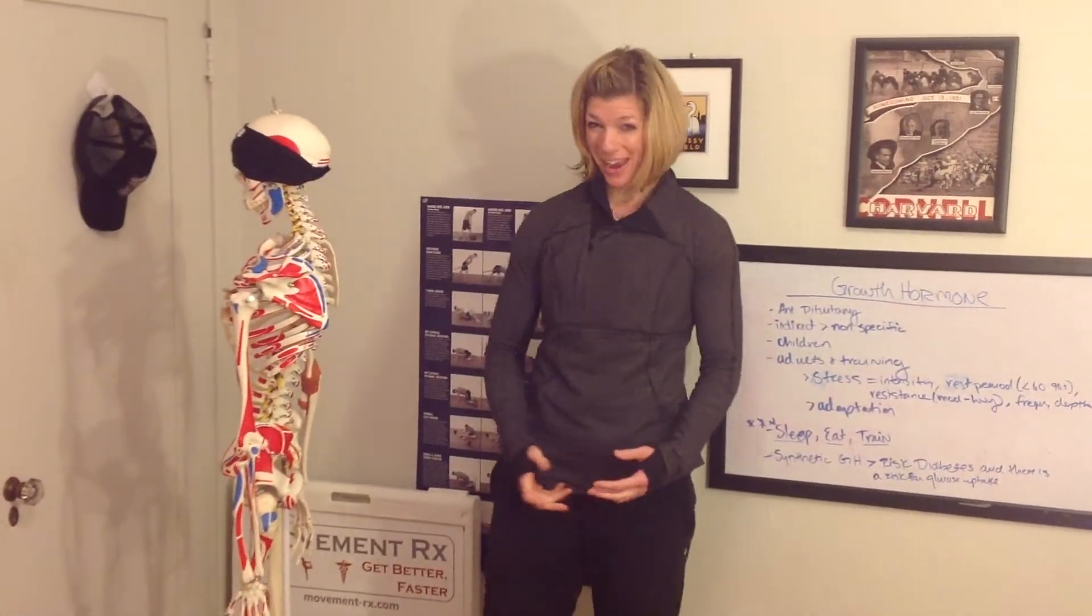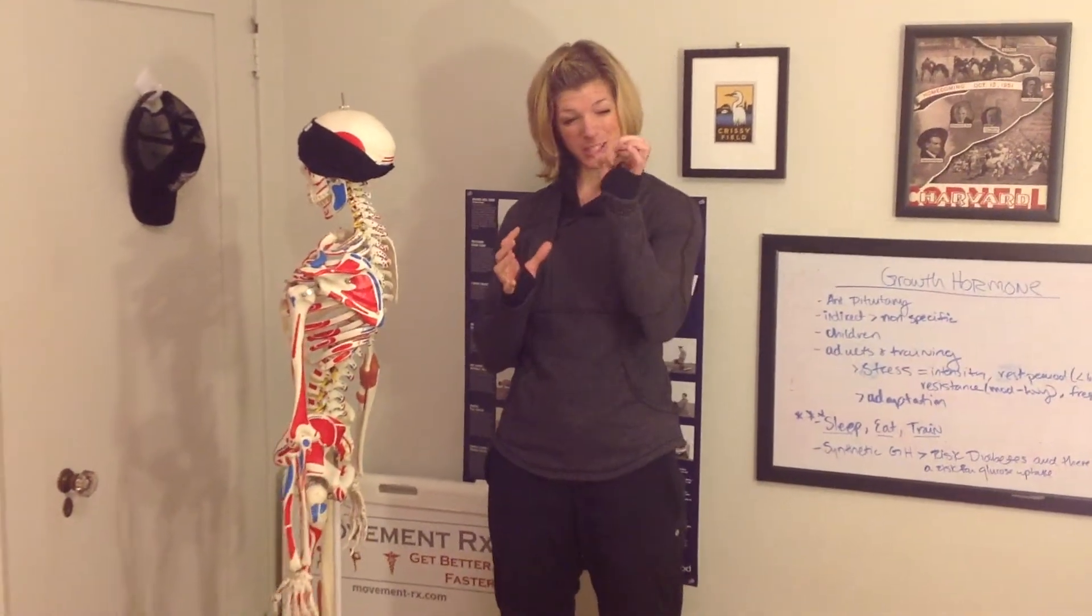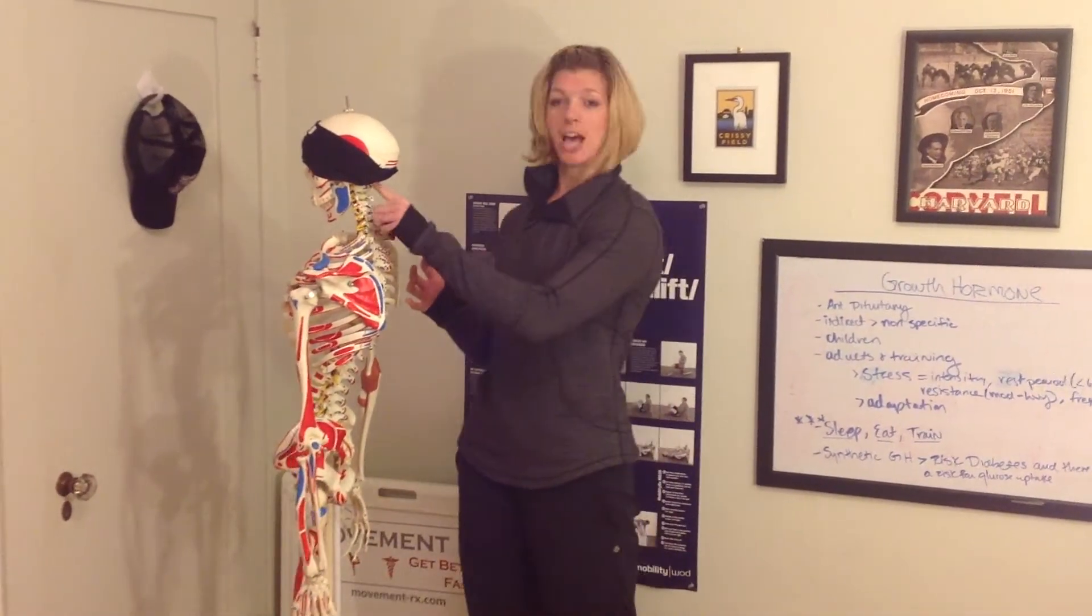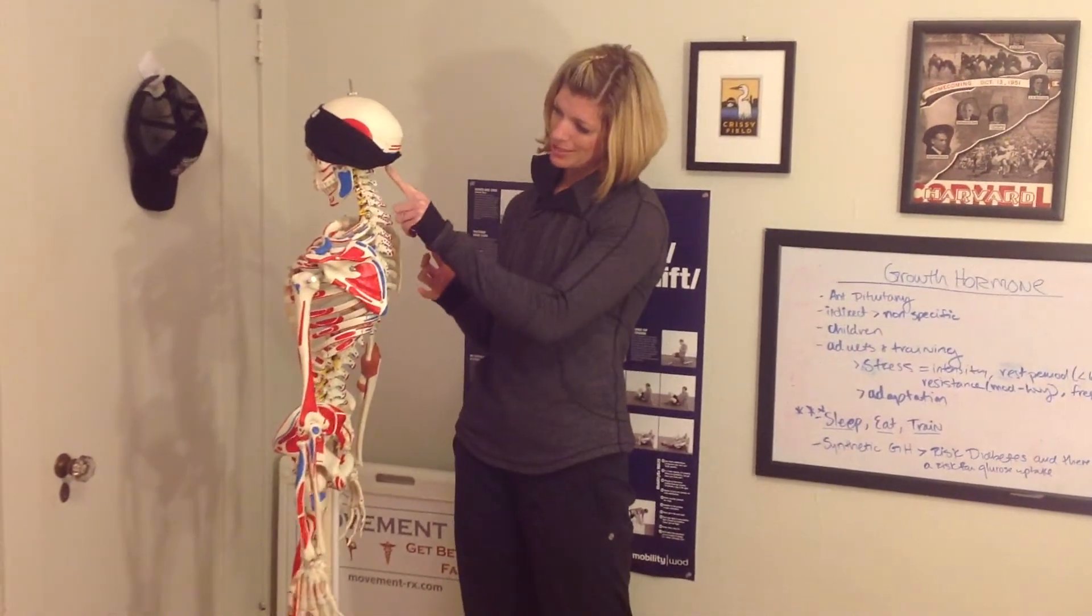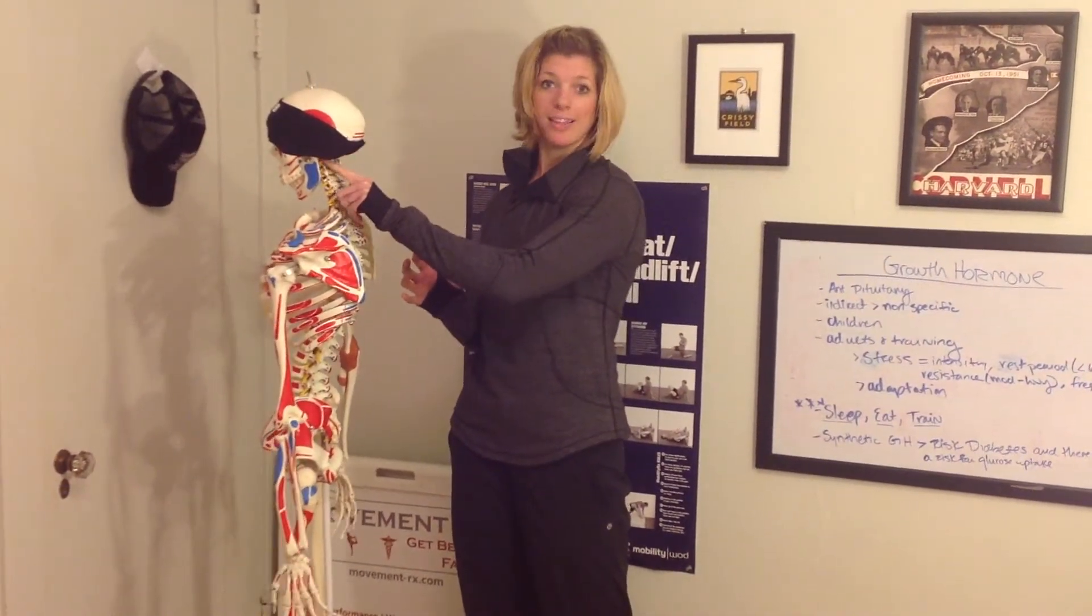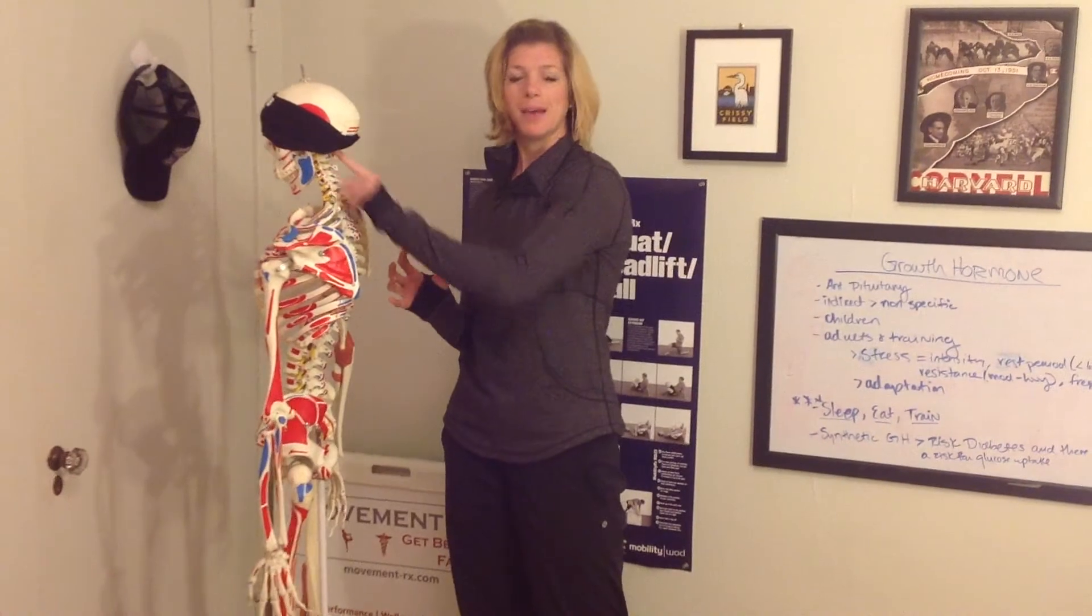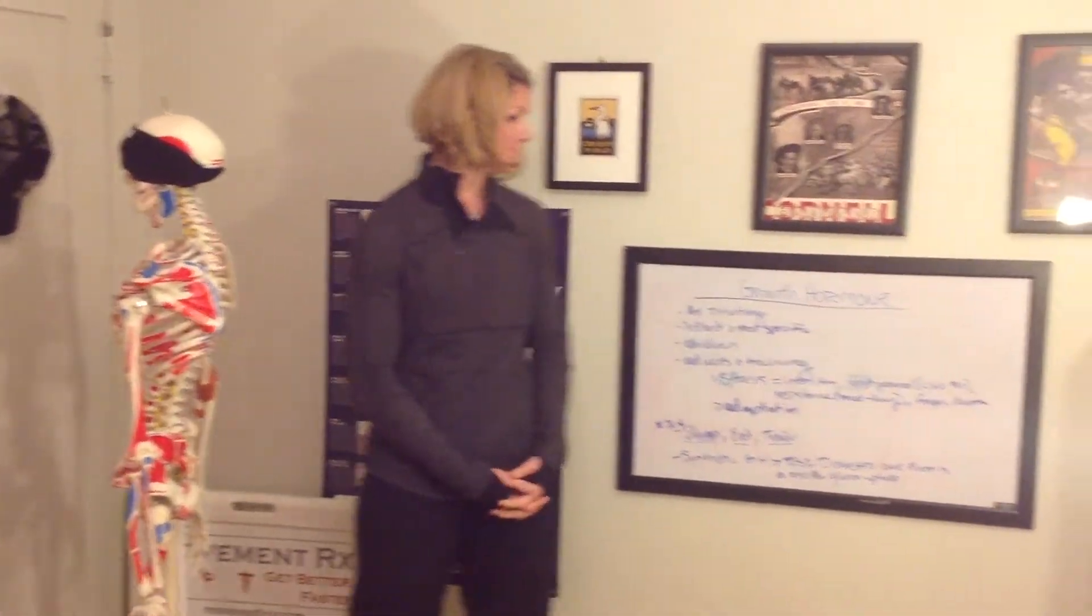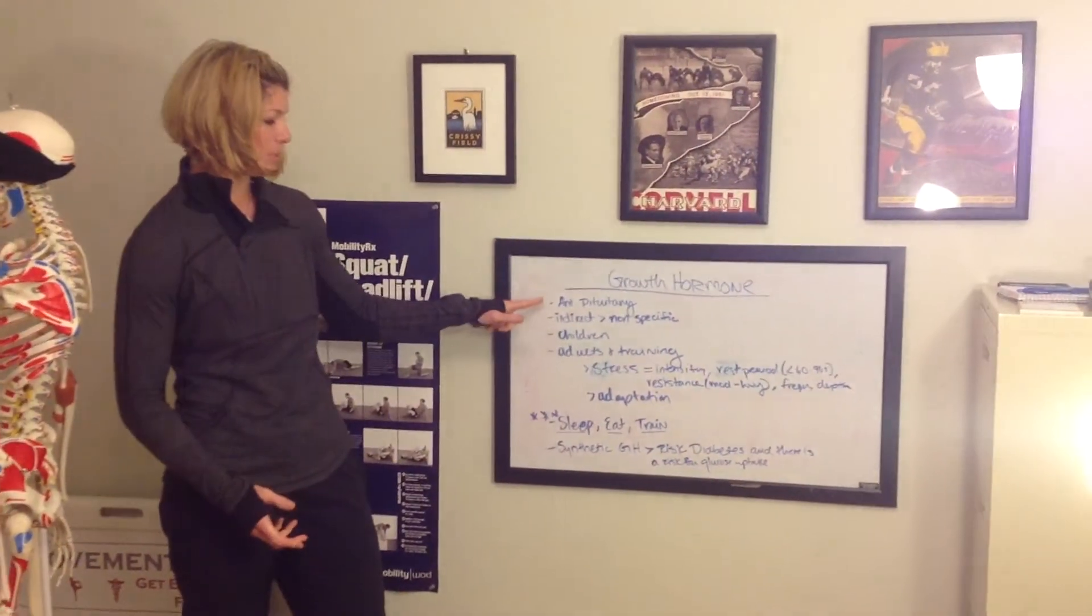First I'm going to talk about where it's located. So the location is the anterior pituitary, which pituitary is a gland. It's a very small pituitary gland that sits on top of your midbrain. So if I were going to stick my finger up his skull, that's where it would be. A little peanut. So it's located on the anterior pituitary.